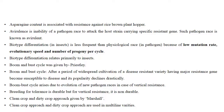Biotype differentiation in insects is less frequent than physiological race differentiation in pathogens. The difference is because of low mutation rate, less evolutionary speed, and fewer progenies produced per cycle in insects compared to pathogens. Biotype differentiation relates primarily to insects.